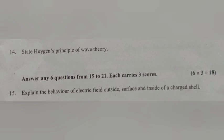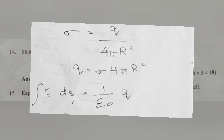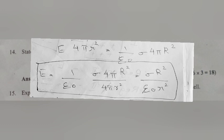Question 15. Explain the behavior of electric field outside, surface and inside of a charged shell. Answer: Outside the shell, E sigma equals q by 4 pi r square. Integral E dot ds equals 1 by epsilon 0 q. E 4 pi r square equals 1 by epsilon 0 sigma 4 pi r square. E equals sigma r square divided by epsilon 0 r square.